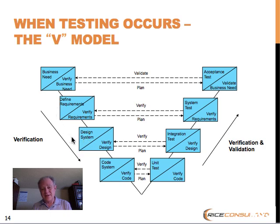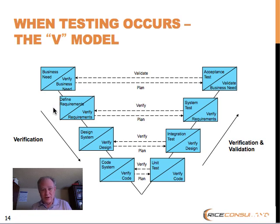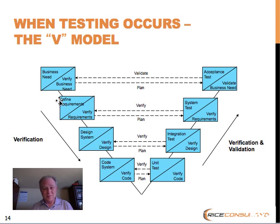Then the system design is created — how the implementation will occur. This design should reflect the requirements, which reflects the business need. It's important to note that there's no real requirement that every step gets put in place before you can go to the next one. This is more about relating the work products to testing. The basis of testing relates to many of the things created over on the left-hand side of the V. Then you get to the code step, where you're implementing the design, which is a reflection of the requirements, which is a reflection of the business need.